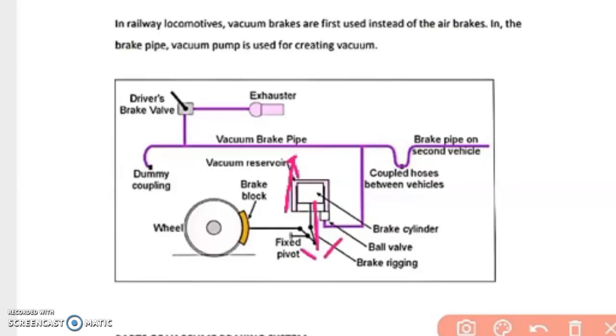Therefore no pull is exerted upon the pull rod. The brakes are released, and the piston returns to its original position in the power cylinder by the brake shoe return springs.